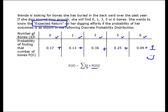So remember the number of bones is X. X always represents our outcome. The probability of her finding that number of bones is the probability of X.